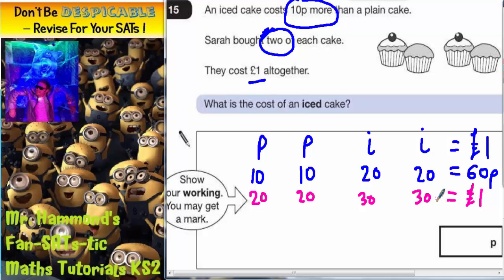So without too much effort, we've managed to find the prices. What is the cost of an iced cake? An iced cake is 30p.